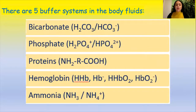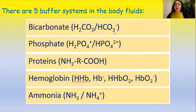In the human body there are five chemical buffer systems. The most known and most important is the bicarbonate buffer system, because both of its components — H₂CO₃ and HCO₃⁻ — can be regulated. Concentration of H₂CO₃ can be regulated by the respiratory system, and concentration of HCO₃⁻ ions can be regulated by the renal system. Other chemical buffers in the human body are phosphate, proteins, hemoglobin, and ammonia.